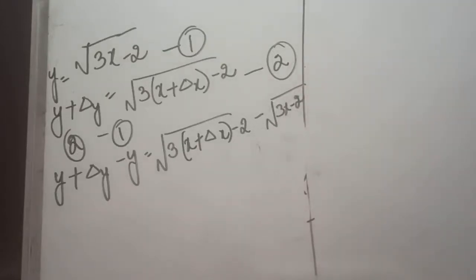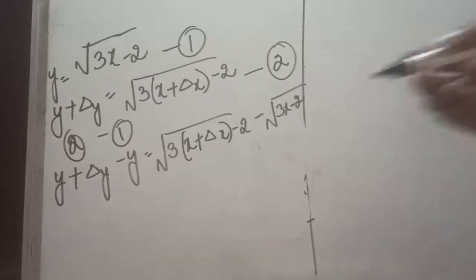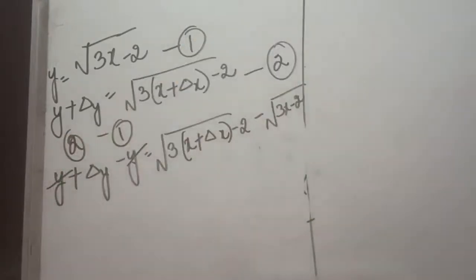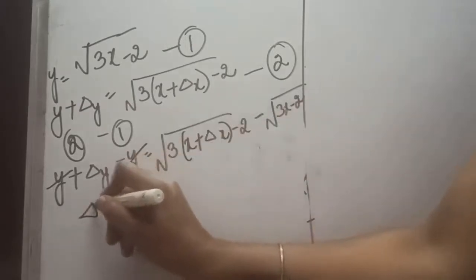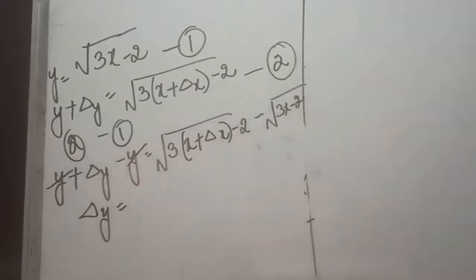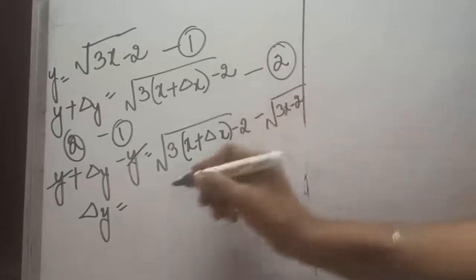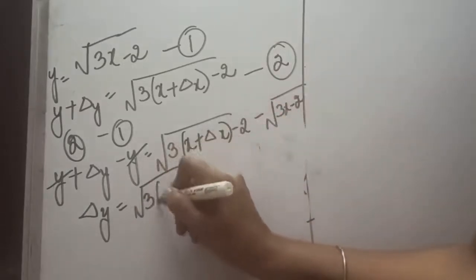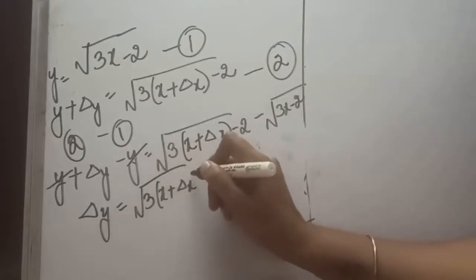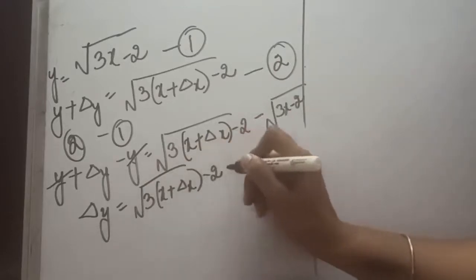This is the case of under roots, so our target should be to remove these under roots so that we can solve the question quite easily. The under root can be cancelled by squaring it out. To do that, we can apply the method of rationalization here — and by applying rationalization we can solve it.